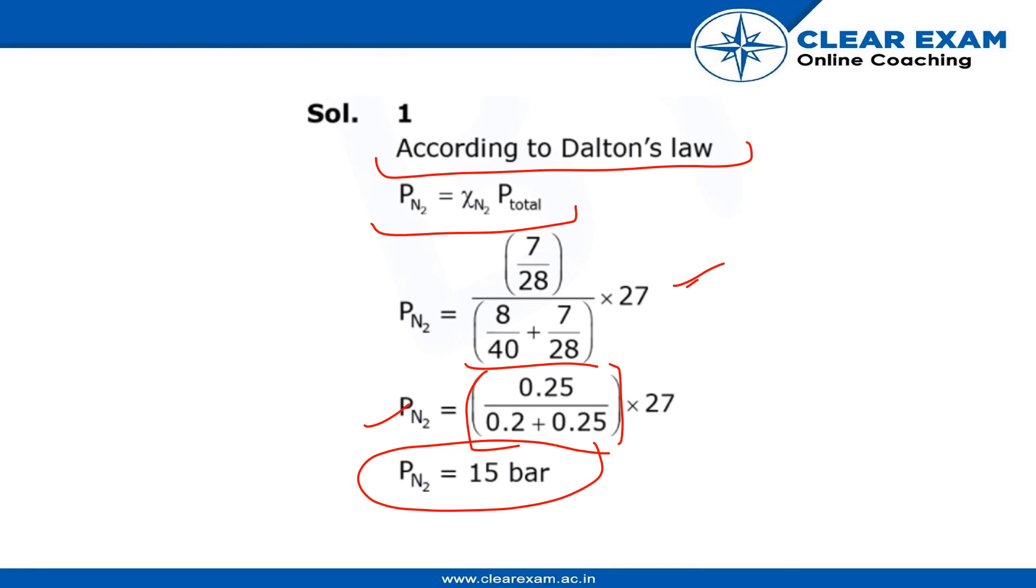The partial pressure PN2 is equal to 15 bar. Like this we can find the partial pressure of other compounds, but we have to find the partial pressure of N2 here only. So correct option is option first, 15 bar.